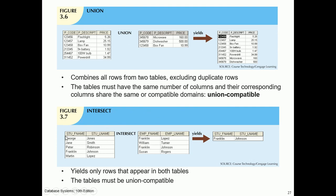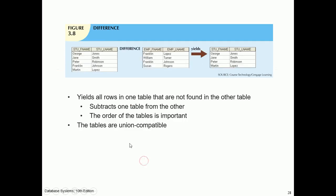For INTERSECT: the intersection of two tables yields only rows that appear in both tables; the tables must be union compatible. For DIFFERENCE: the difference operation yields all rows in one table that are not found in the other — it subtracts one table from the other. The order of the tables is important, and the tables must be union compatible.